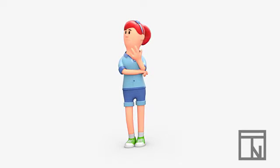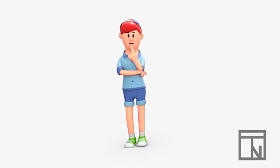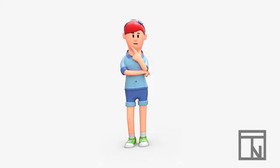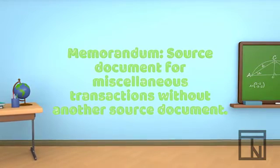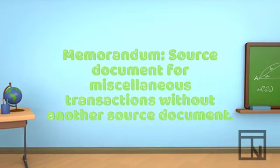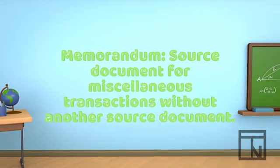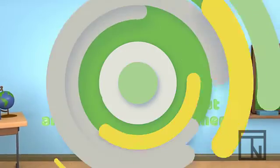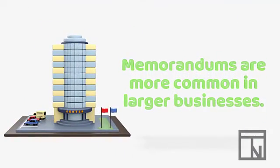In every business, there are always some transactions that don't have a source document provided, but in order to create a record in the accounting system, every transaction must have a source document. To get around this dilemma, a special source document is created called a memorandum, or memo for short. A memo is a simple document that describes the unique transaction so that there is a record of why the transaction is being recorded into the accounting system. Sometimes they are also signed by someone with authority. Memorandums are rarely used in a formal sense by small businesses, but larger corporations still use memorandums as source documents for those unique transactions that don't have any other source document provided.